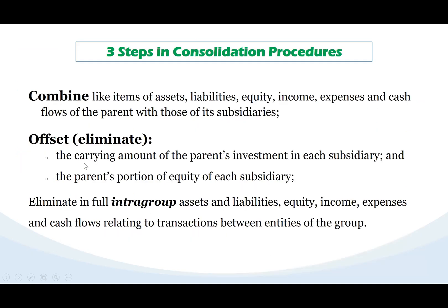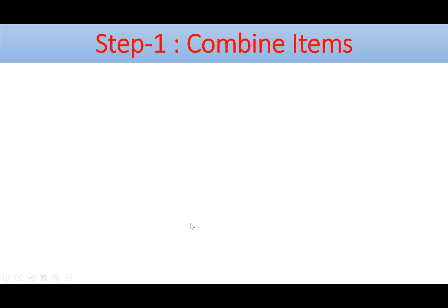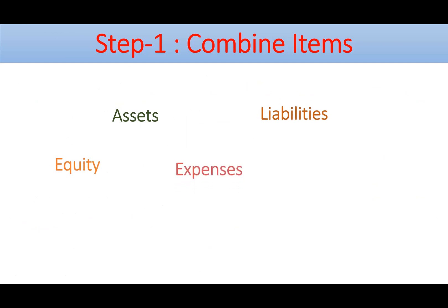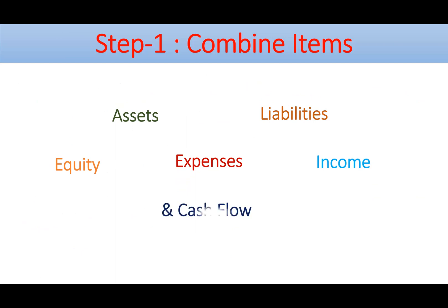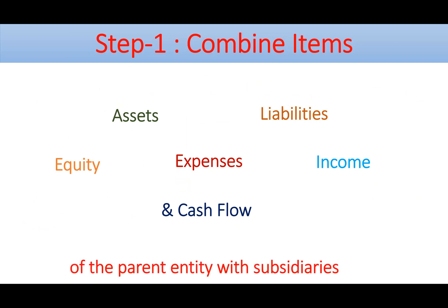First of all, we combine and offset, and inter-group transactions are eliminated. The first step is to combine: assets with assets, liabilities with liabilities, equity, expenses, income, and so on. This is the basic first step for the parent and its subsidiary.